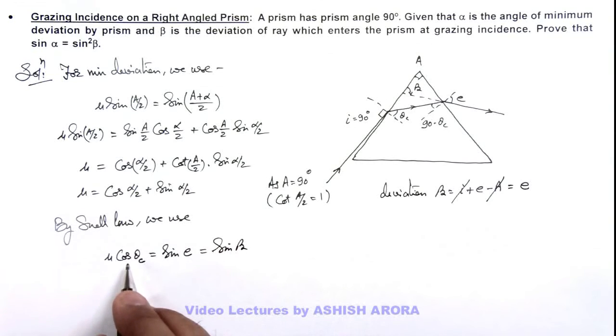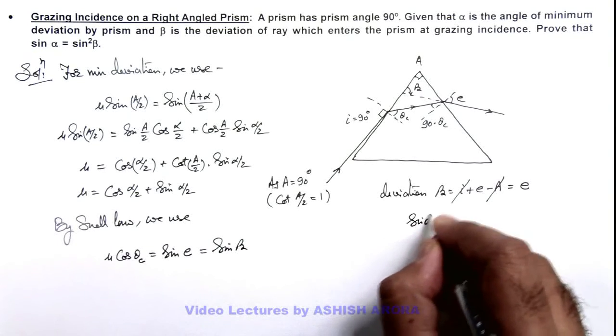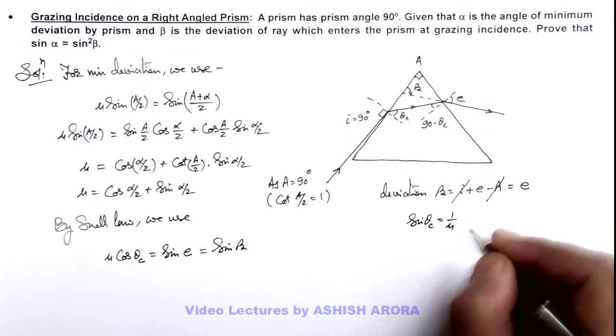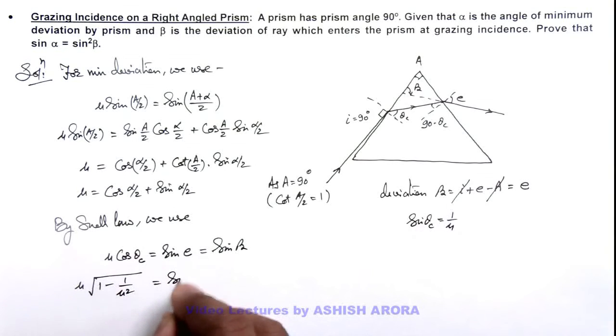And here if we substitute the value of cos theta c, as we know sine theta c is equal to 1 by mu, so here we can write this is mu root of 1 minus 1 by mu squared is equal to sine beta. And if we square it this will give us mu squared minus 1 is equal to sine squared beta.